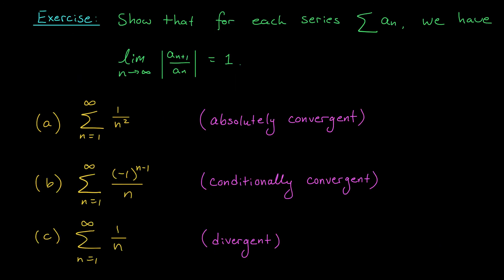To end this video, I'll leave you with the following exercise. For each of three series, compute the limit from the ratio test and show that the value equals 1. Notice, however, that the series behave very differently. The first is a convergent p-series with only positive terms — absolutely convergent. The second is the alternating harmonic series, which converges conditionally. Finally, we have the harmonic series, which diverges. This exercise shows that you can't draw any conclusions when your ratio test gives a limit of 1. Your series could converge absolutely, conditionally, or diverge — you'd have to apply further tests.